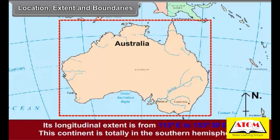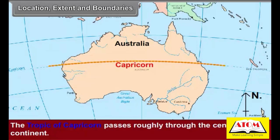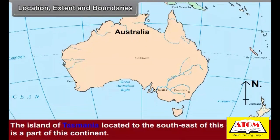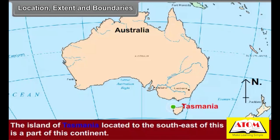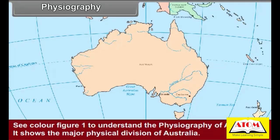This continent is totally in the southern hemisphere. The Tropic of Capricorn passes roughly through the center of the continent. The island of Tasmania, located to the southeast of this continent, is a part of this continent. See figure one and list the oceans, seas, bays, and gulfs that surround the continent.